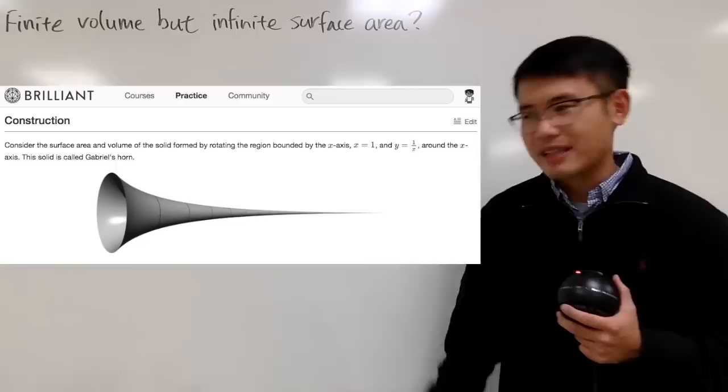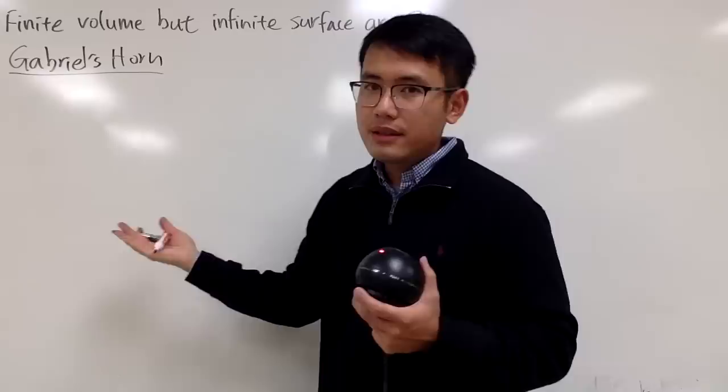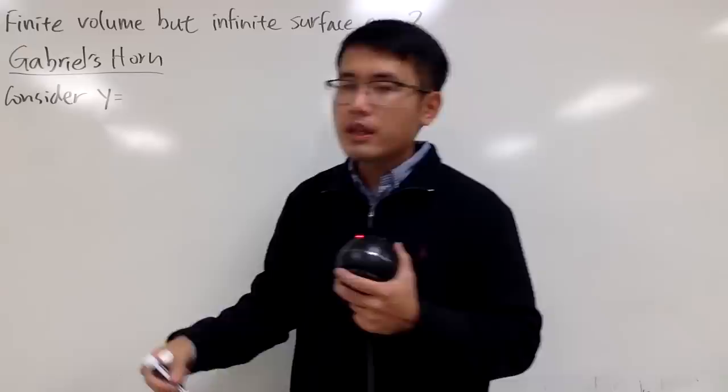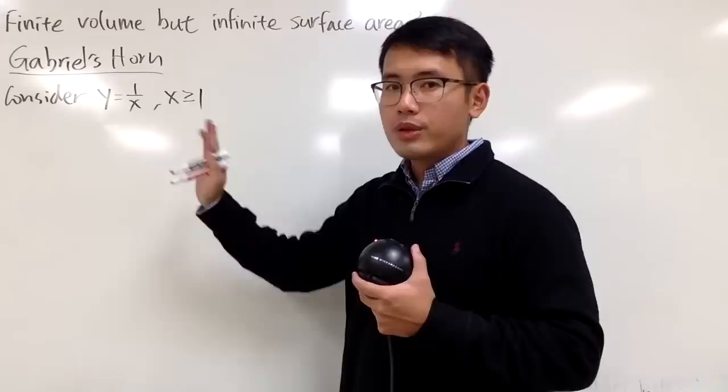Let me show you the definition of Gabriel's horn. We're going to consider a region first. You have a function 1 over x, and you want to go from x greater than or equal to 1. So it's the area under the curve from 1 over x, and you consider 1 to infinity.